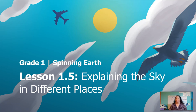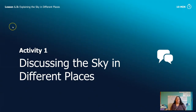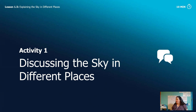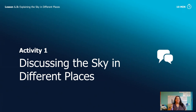Today, we are going to explain the sky in different places. Let me start by telling you what you need today. You need someone to talk to. I'm going to talk to Lavender. If you don't have someone in your house you can talk to, you can always talk to your thumb again, or a stuffed animal. You also need something to write with and something to write on. If you have the packet that comes with this lesson, you can use that, but you don't need it. All you need is a pen and a piece of paper and someone to talk to.